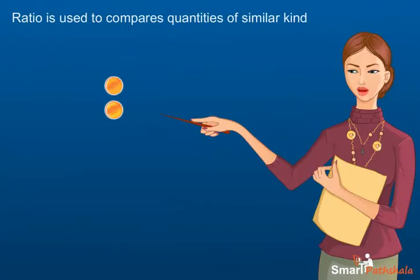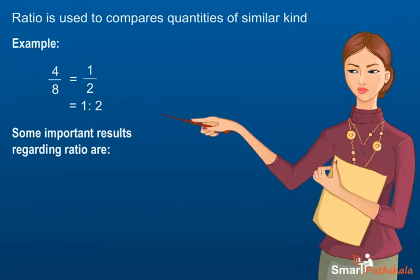Ratios are written with a colon symbol. For example, to find the ratio between 4 and 8, we divide both quantities and write 4 upon 8, then simplify the fraction and write it as 1 upon 2 or 1 is to 2. Some important results regarding ratio are: